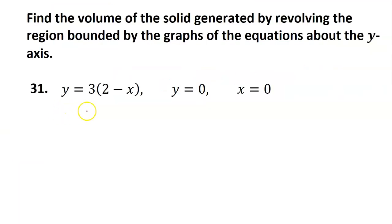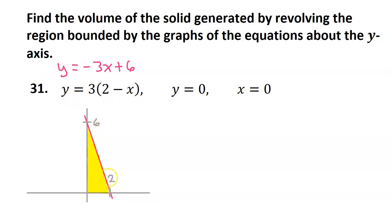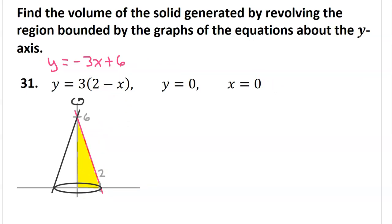For number 31, we will find the region bounded by these three equations and then rotate it around the y-axis to form the solid. Distributing the 3, we get y equals 6 minus 3x, which is the same as y equals negative 3x plus 6. Here is the line y equals negative 3x plus 6; y equals 0 and x equals 0 are the x and y-axis. This yellow region is the region bounded by the three equations. If we rotate the region around the y-axis, we get an inverted cone shape.